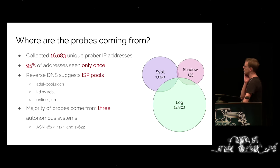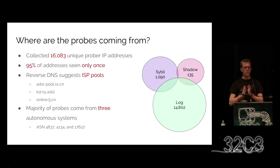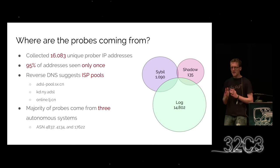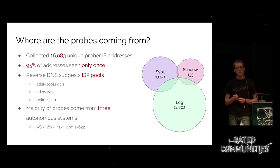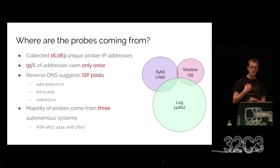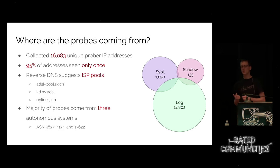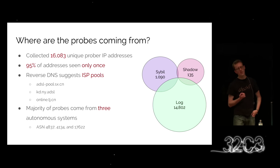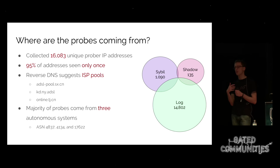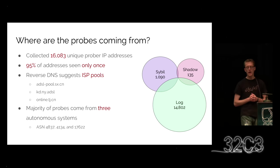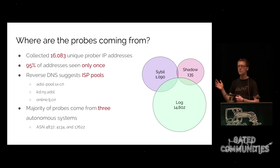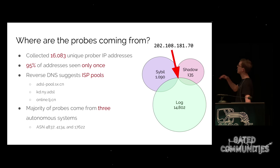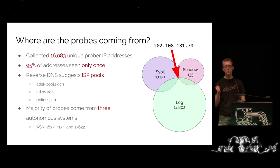The first thing we were interested in was where all these IP addresses were coming from. Looking at our three datasets combined, we had a little more than 16,000 unique probing IP addresses. There is very little repetition — 95% of them were seen only once. We did reverse lookups and found strings like 'ADSL' in there, suggesting a lot of these originate from ISP pools, which the WHOIS records basically confirmed. There is one IP address that shows up a lot — almost 50% of the probing activity used to come from this single IP address.